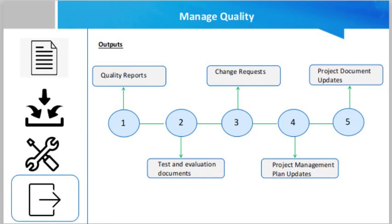Then test and evaluation documents, which are used in the next process of Control Quality. These include checklists to ensure all processes are done correctly, check sheets, requirement traceability, metrics, etc. Then change requests: as a result of this process, there may be recommendations for changes in the project management plan, project documents, and project management processes.